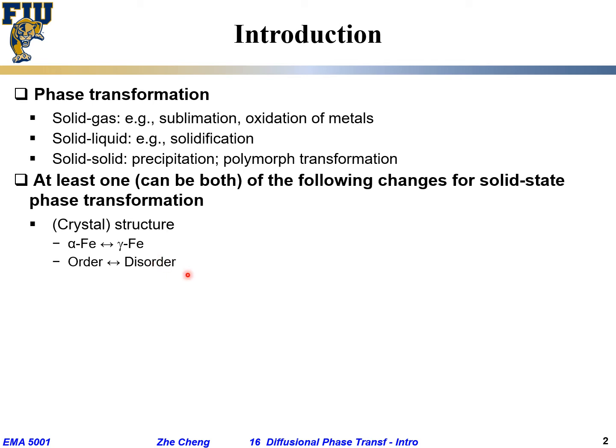Another example is the order-disorder phase transformation. In this case the material composition does not change, but the crystal structure changes from an ordered phase to a disordered phase. This is typical in alloys between different metals: at low temperature the atoms may be arranged in a specific ordered fashion, while at higher temperature they form a disordered, complete solid solution. We'll talk about this in greater detail later.